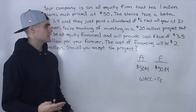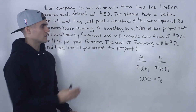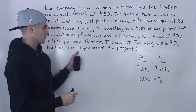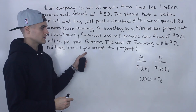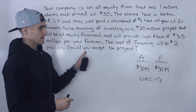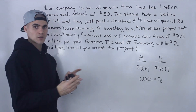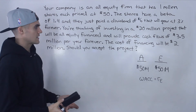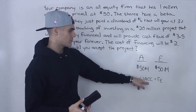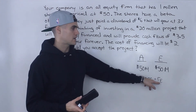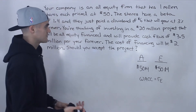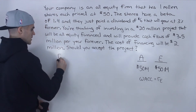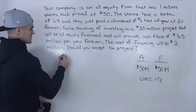In this question, the company is taking on a project and we need to decide whether to accept it. To find that out, we calculate the NPV of the project by discounting all cash flows to time zero using the WACC — which, since this is an all-equity firm, equals the return on equity. So let's find what our return on equity is going to be.